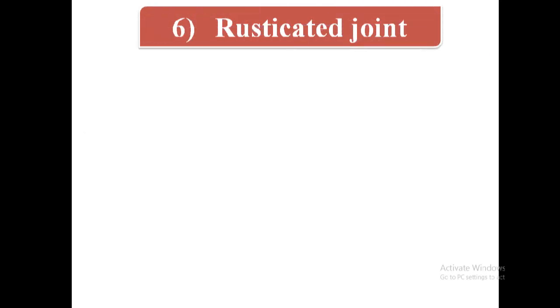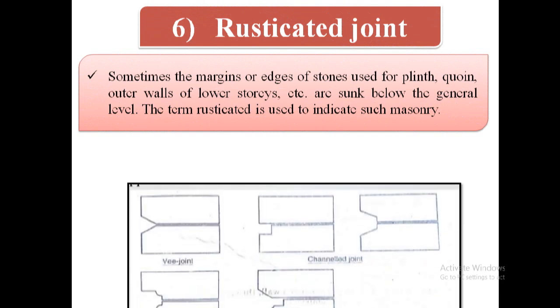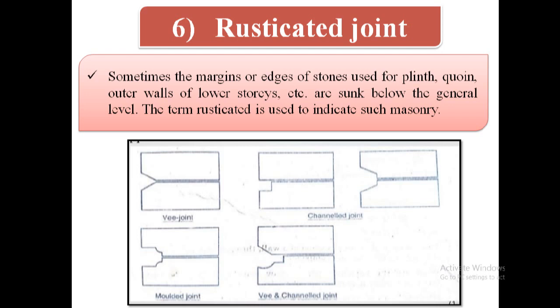The sixth type of joint is rusticated joint. In this type of joint, sometimes the margins or edges of stones used for plinth, coins, outer walls of lower storage, etc. are sunk below the general level. The term rusticated is used to indicate such masonry.